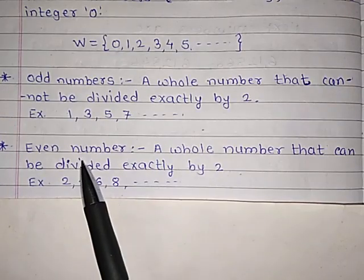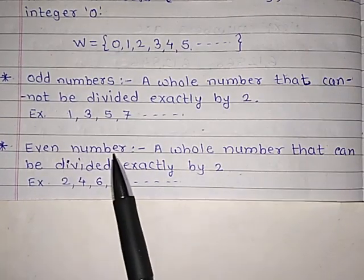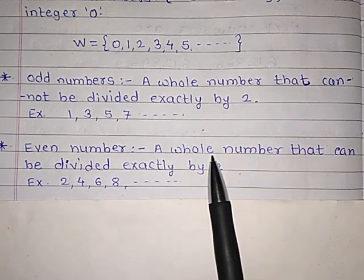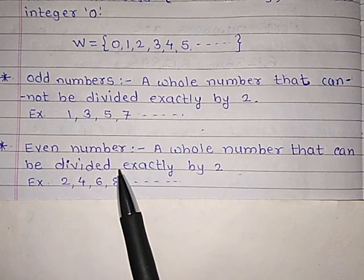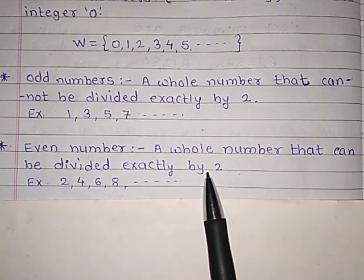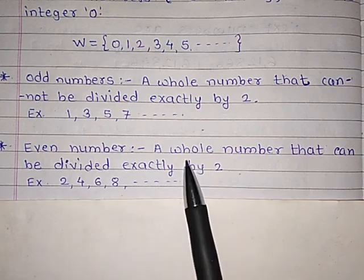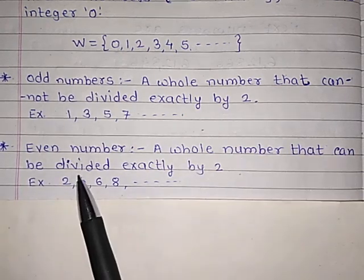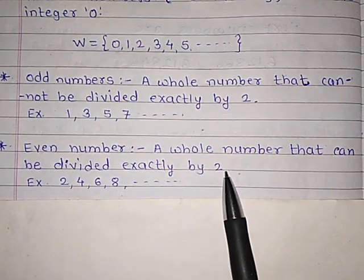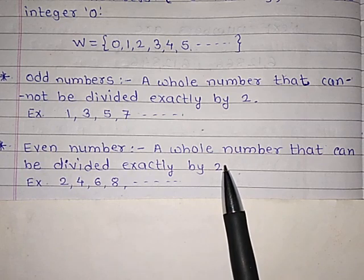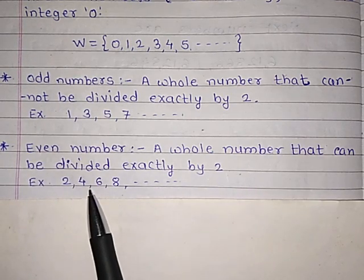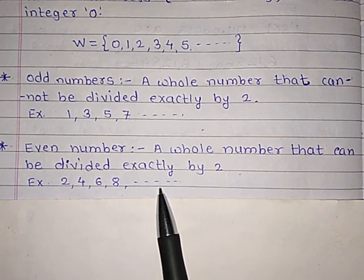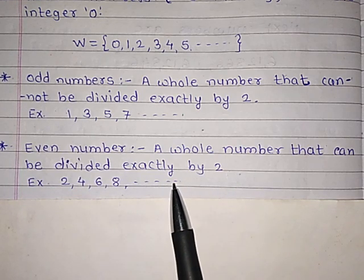Next: even numbers. A whole number that can be divided exactly by 2 without any remainder. For example: 2, 4, 6, 8, 10, 12, and so on.